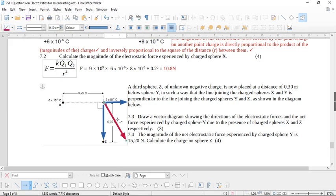So this will be your resultant in the red over here. So there's f, you should label them, f x y, f y z, and there's the resultant. Now it says to you, the magnitude of the net electrostatic force experienced by charge sphere y is 15.2 newtons. So let's calculate the charge on sphere z.